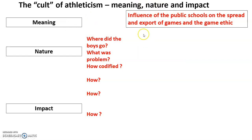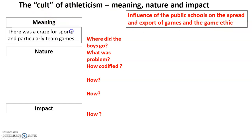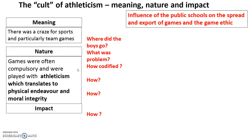The next part covers the cult of athleticism — its meaning, nature, and impact — and then how public schools influenced the spread and export of games and the game ethic. The cult of athleticism can be thought of as a craze — specifically a craze for sports and particularly team games within public schools. The nature of these was physical endeavor and moral integrity. Games were often compulsory and played with athleticism, translating to physical endeavor and moral integrity — these muscular Christianity values.